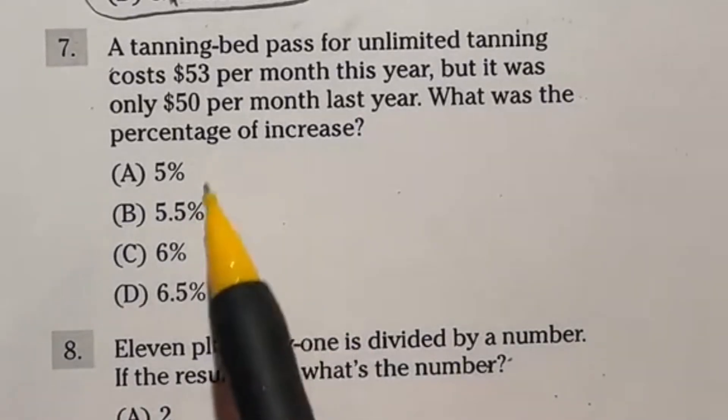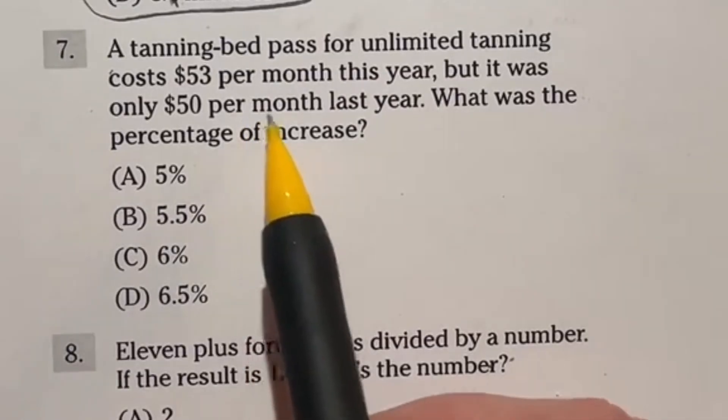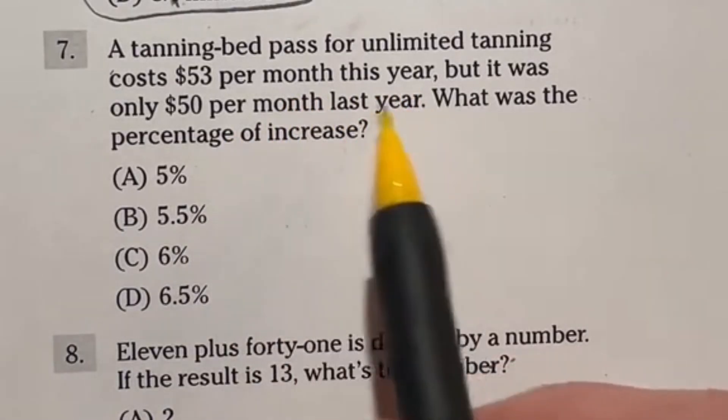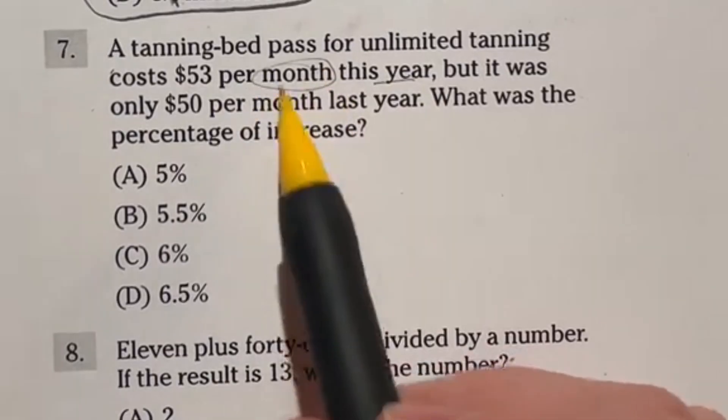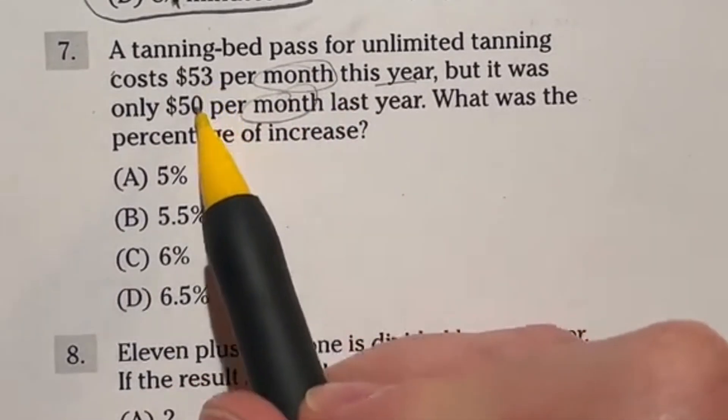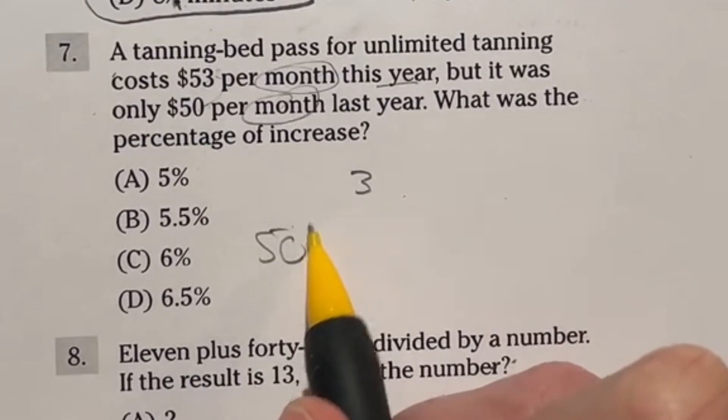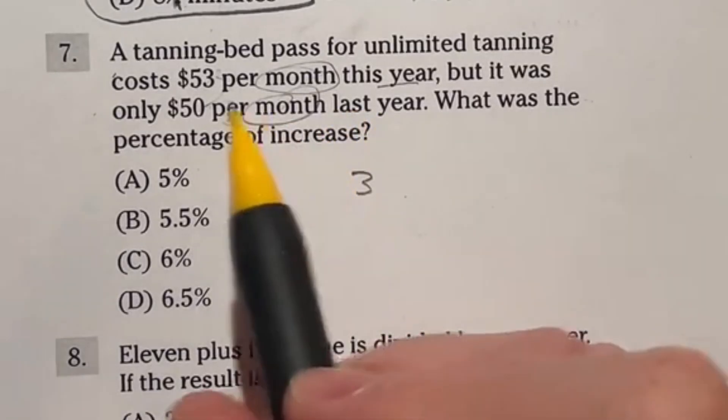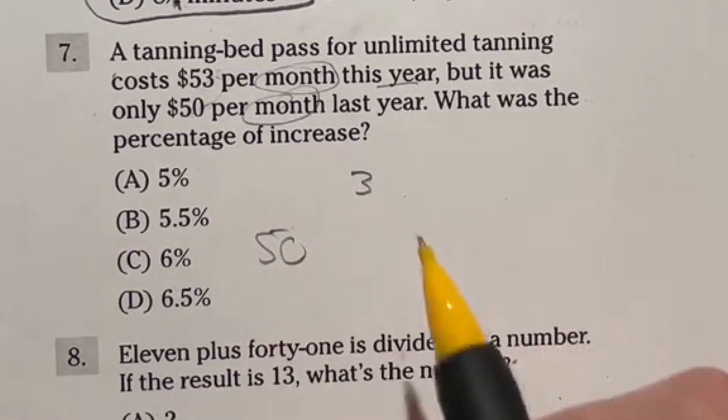Number seven on the ASVAB says a tanning bed pass for unlimited tanning costs $53 per month this year. But it was only $50 per month last year. What was the percentage increase? If you're thinking to yourself like, oh, I got to find out how much of a savings per year this was or what the difference is per year, it does not matter what it is per year, you can actually just stick with the month because it would scale the same either way. So in this case, let's go ahead and first off look at the difference here. Obviously, we are increasing by $3. And the original was 50. So we're going from 50 to 53. So what percent increase is that? Because we're basing this off of the original 50, we have to see how much of an increase three would be from 50.